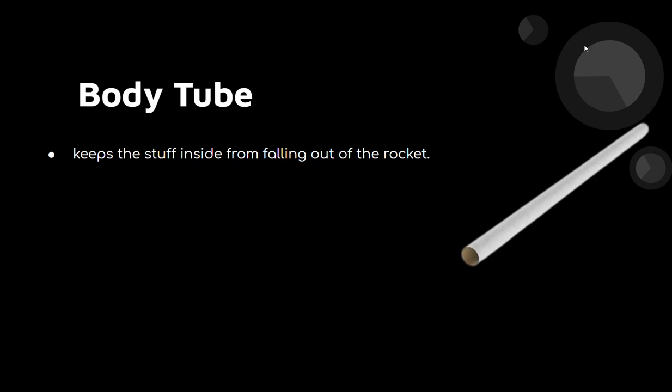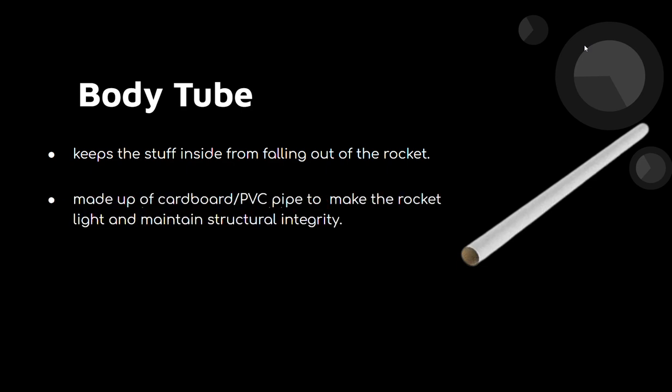The next component is the body tube. It's the casing that houses all the stuff inside — all the electronics, all the materials, and everything of our rocket. It's generally made up of cardboard or PVC pipe to keep the rocket light and maintain structural integrity, which is an important property of the rocket.